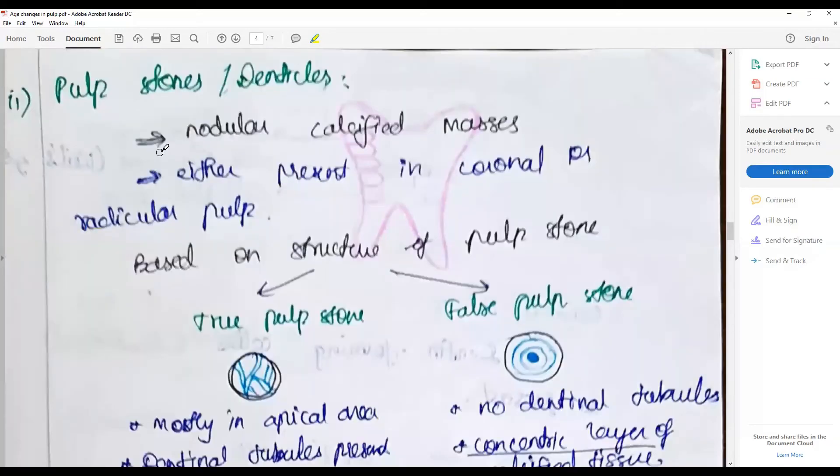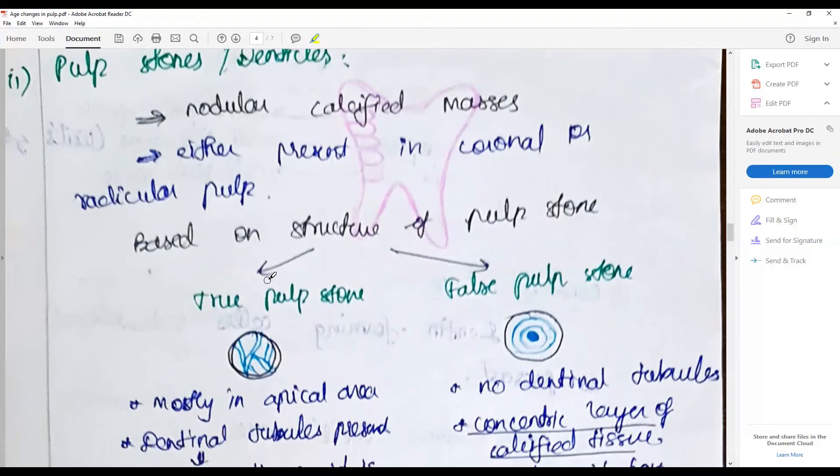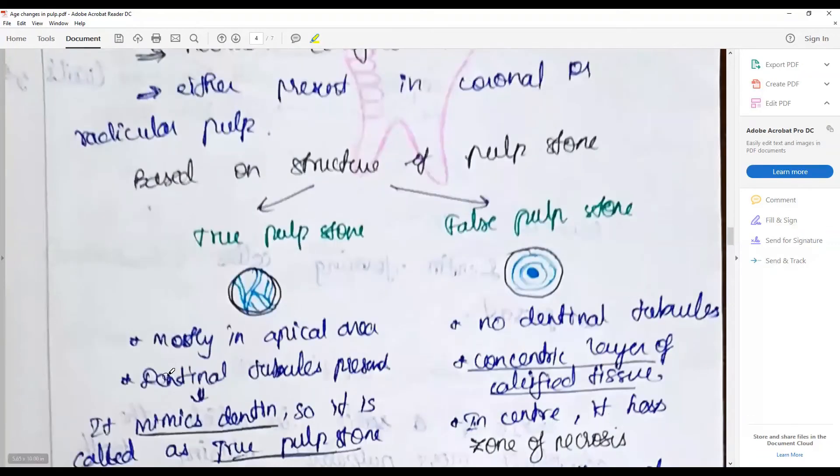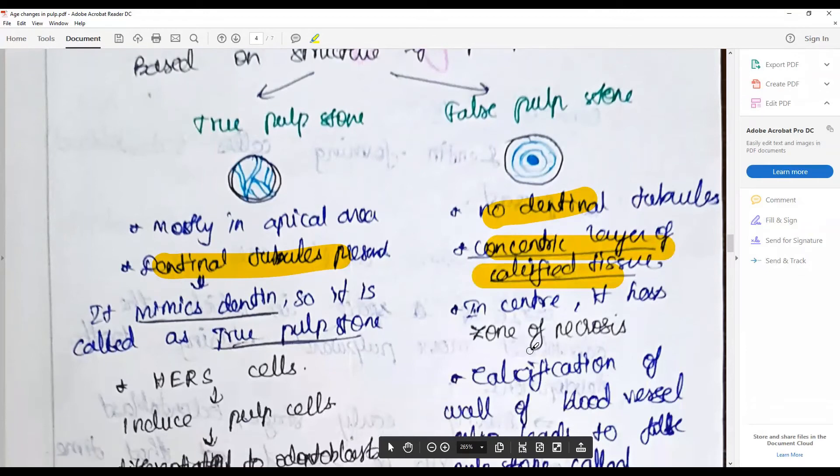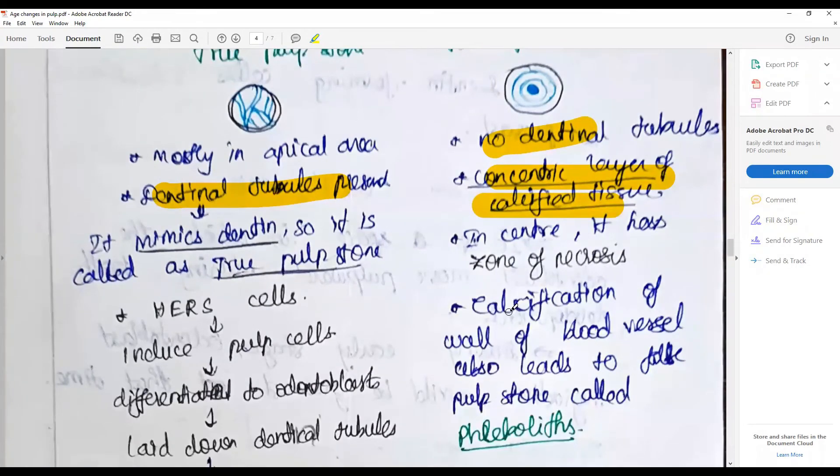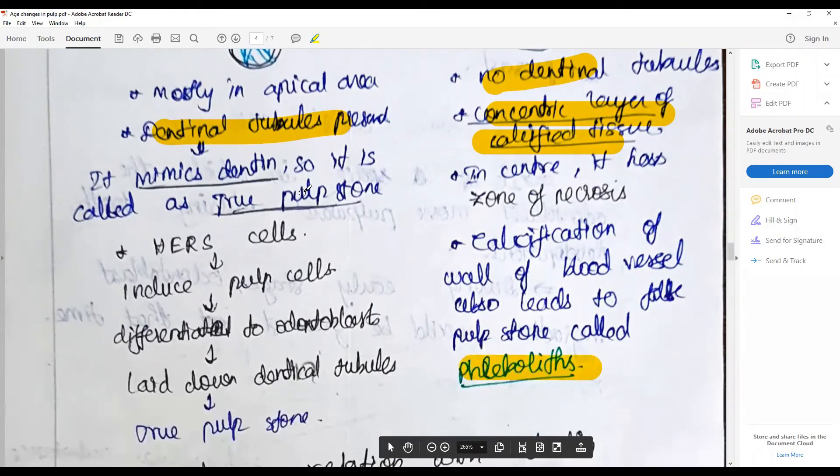Greater than 50 years there is high chance of having more than one area of pulpal calcification. To go with the pulp stones and denticles, they are nodular calcified masses present either in the coronal or radicular. They are true when they have dentinal tubules. They are classified as pulp stone when they lack the typical arrangement of dentinal tubules and are made up of concentric layers of calcified tissue. Perhaps a nidus or a zone of necrosis is present.